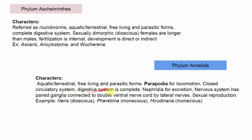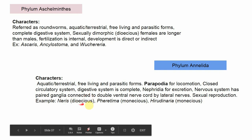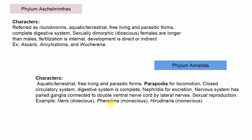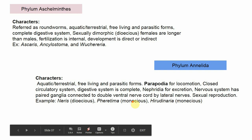In Annelida, the digestive system is complete. For excretion, a structure called nephridia is present. The nervous system is advanced, with paired ganglia connected to a double ventral nerve cord by lateral nerves. Reproduction is sexual. Examples: Nereis, which is dioecious (unisexual); Pheretima (earthworm), which is monoecious (bisexual/hermaphrodite); and Hirudinaria (leech), also monoecious.